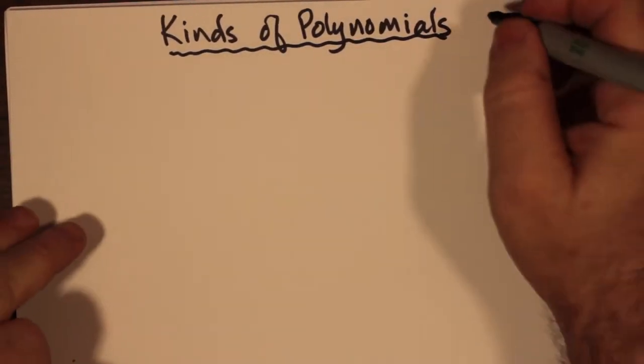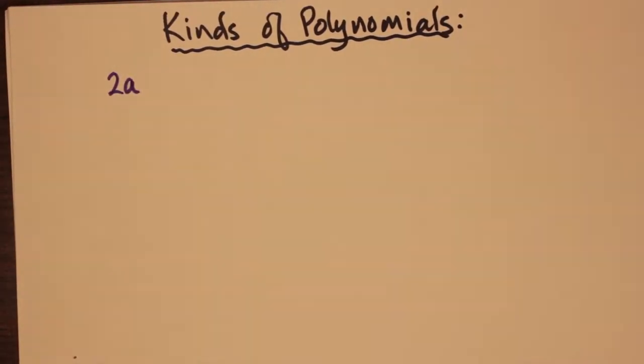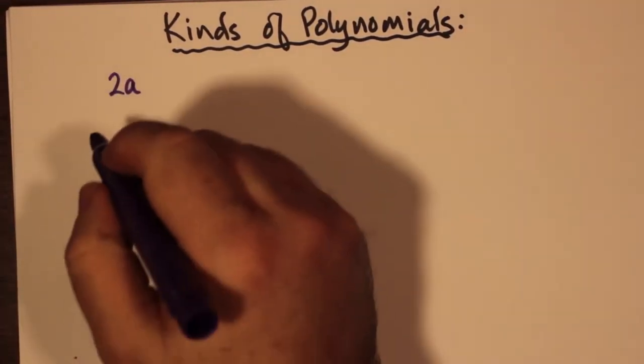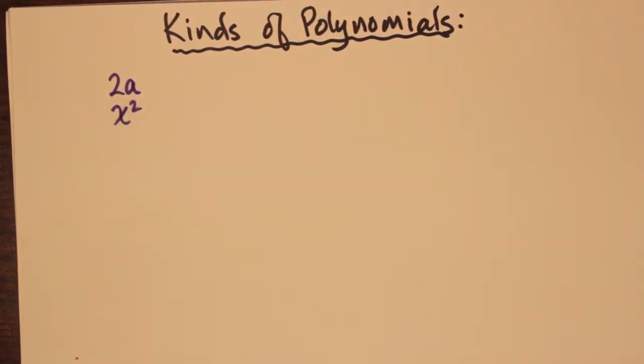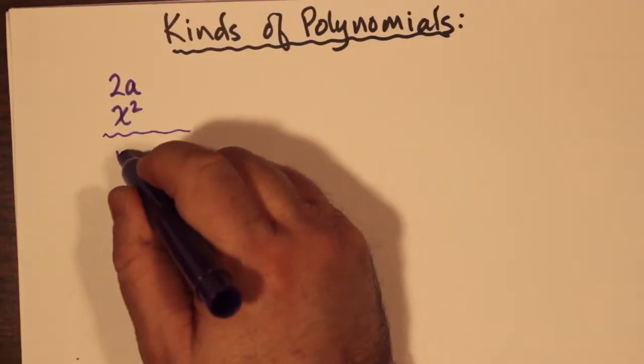Now we're going to talk about kinds of polynomials. We have here examples like 2a and x². There's nothing before or after the term; there could be a minus sign that would just change the value of the coefficient. Since we're just taking 2a by itself or x² by itself, these are called monomials and they consist of one term.